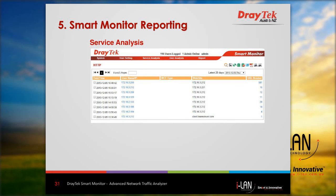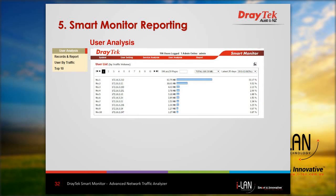After double-clicking the HTTP menu option in the pull-down list, you can see the HTTP traffic corresponding to each user, shown here by IP address. Under user analysis, you can view records and reports and look at each user by traffic and top 10 users. The user list by traffic volume is shown as a bar graph with the highest user at the top and the lowest at the bottom.